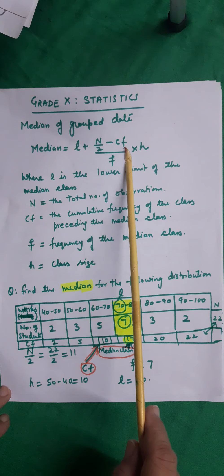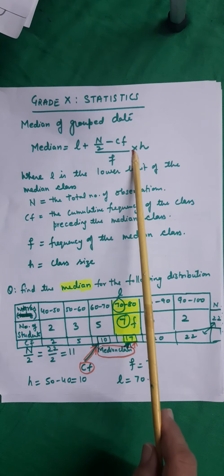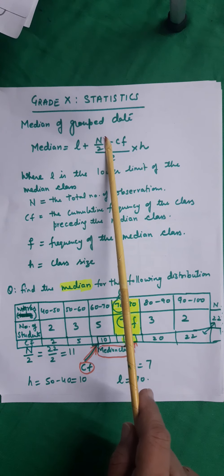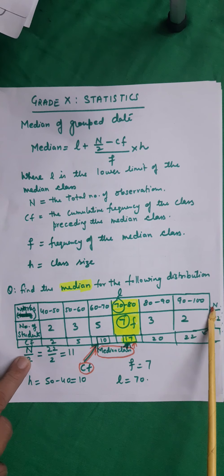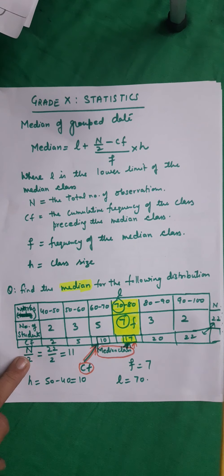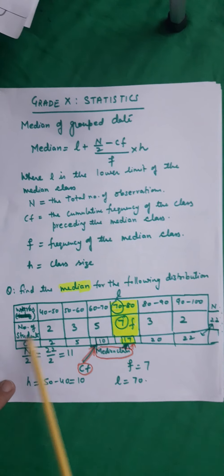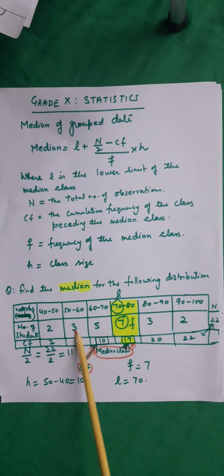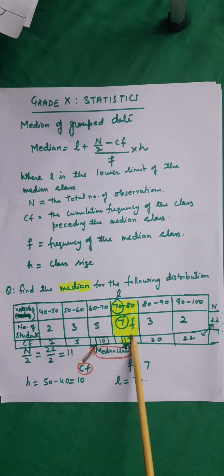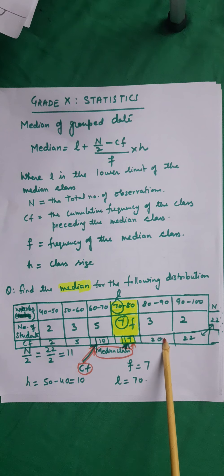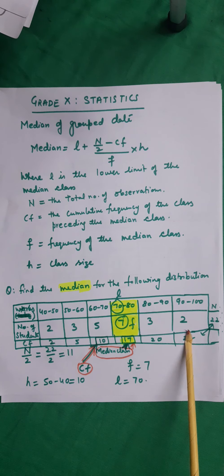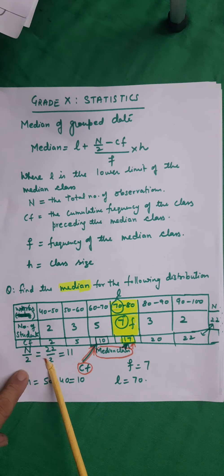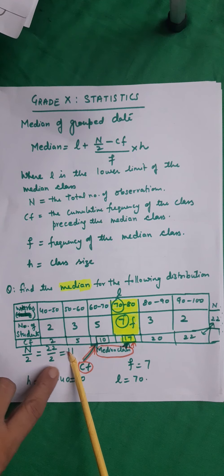We need to find all the terms in the formula. First, N is the total frequency: adding all gives N equals 22. Then we calculate cumulative frequencies: 2, 5, 10, 17, 20, 22. For the median class, we need N by 2, which equals 22 upon 2, equal to 11.